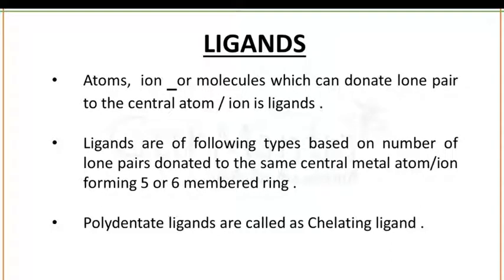The atoms, ions, or molecules which can donate a lone pair to the central atom or ion are known as ligands. Ligands are of the following types based on the number of lone pairs donated to the same central metal atom or ion, forming five or six membered rings. Ligands can donate one to many electron pairs, and on that basis we can classify them — for example, monodentate ligands, bidentate ligands, polydentate ligands, etc.